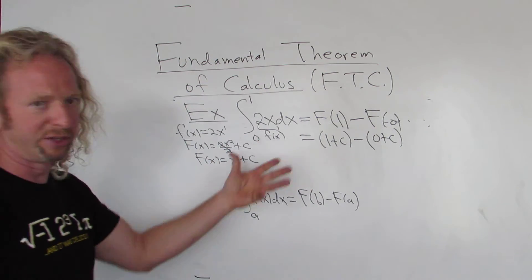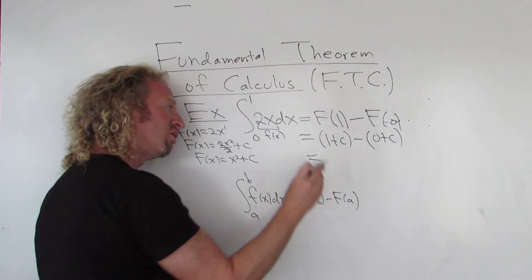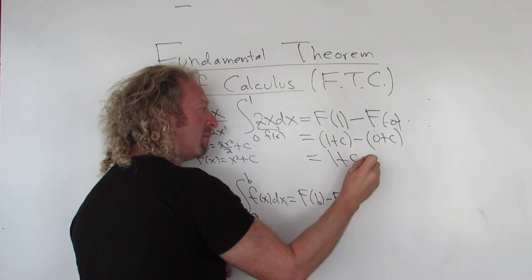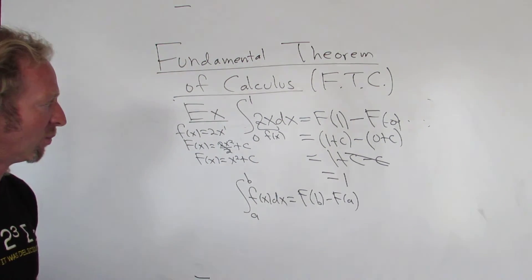It's instructive to do this. This is not how normal people do this. I'll show you in a minute. But it's good, it's worthwhile. So here we get 1 plus c, minus c. And c's cancel. So the answer is 1. The answer you get here is 1.